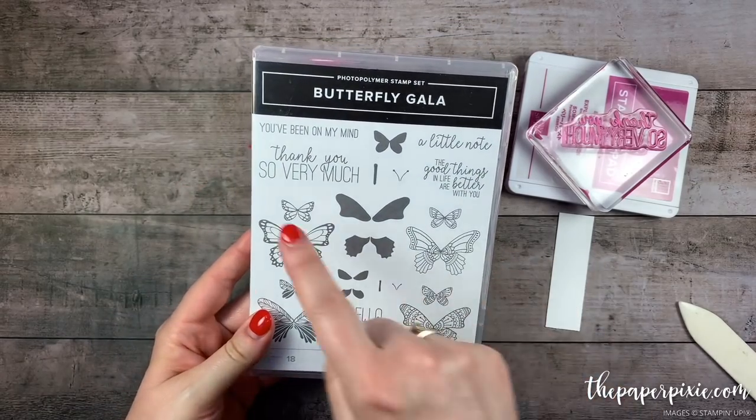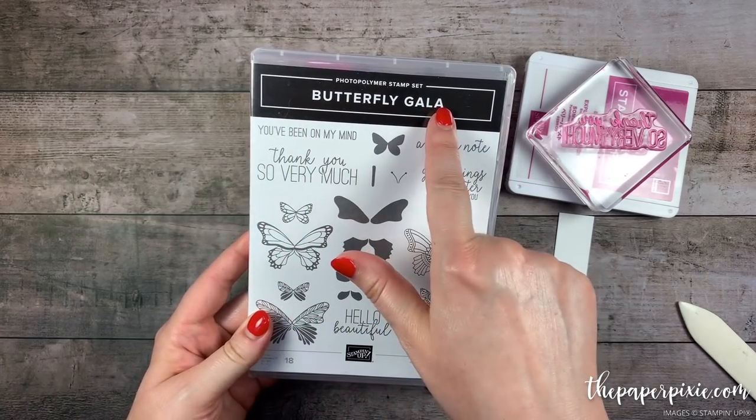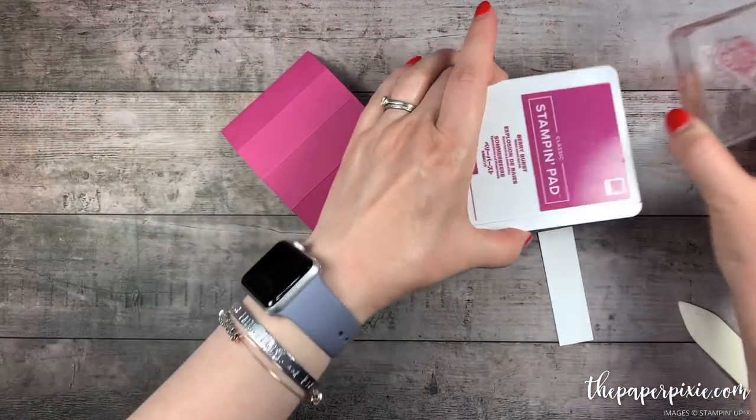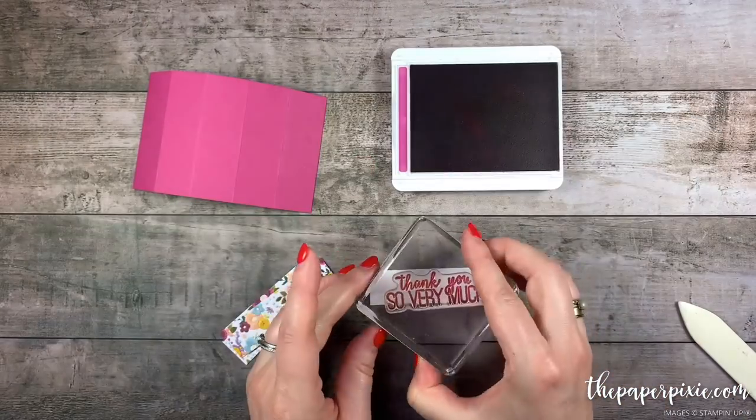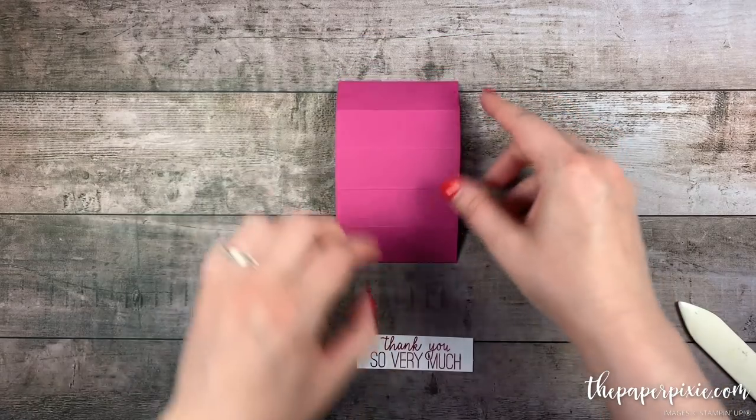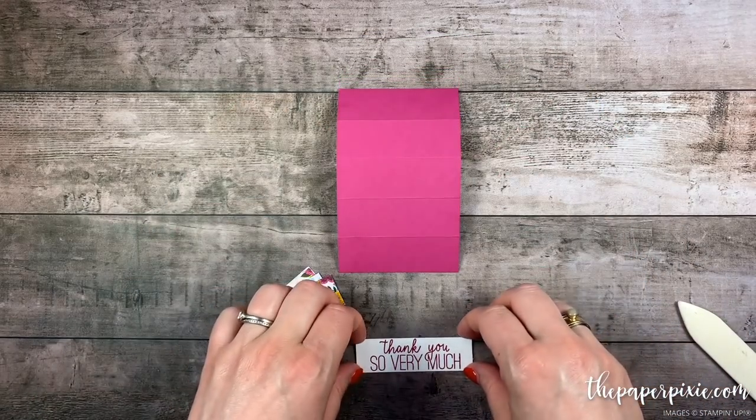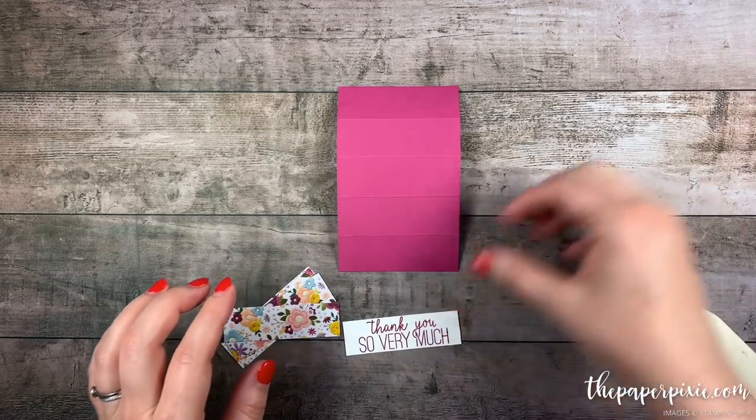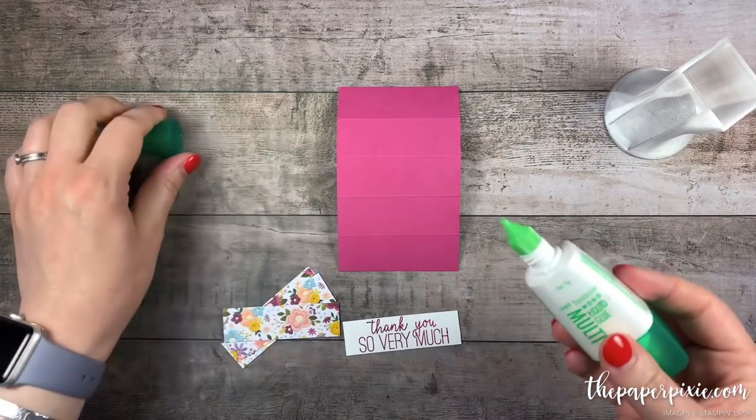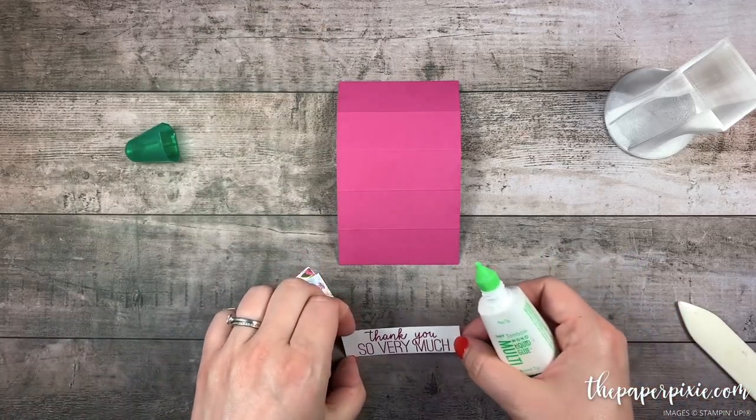We're gonna stamp the sentiment "thank you so very much" from the butterfly gala stamp set. We're gonna stamp that in Berry Burst onto the whisper white piece and then with this piece in a portrait orientation we're first gonna glue the sentiment to that bottom section facing me and I'm just gonna use liquid glue for this and the rest of the pieces we're gonna glue the panels above it.